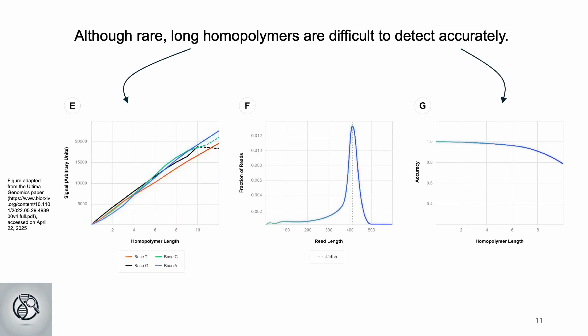A major challenge in flow-based sequencing and all NGS is reduced accuracy in reading homopolymers, though it's more pronounced here. Signal stays proportional to homopolymer length up to a point, then saturates.